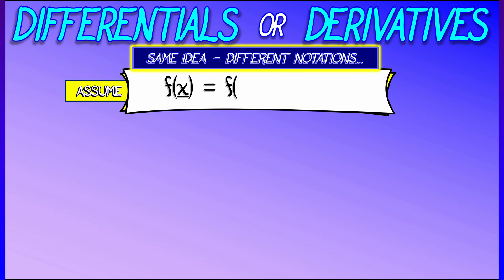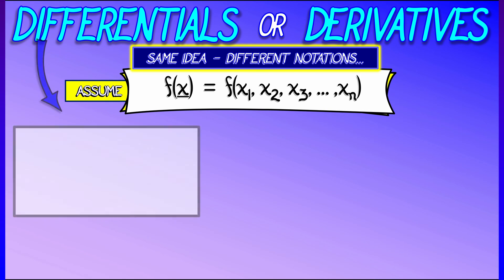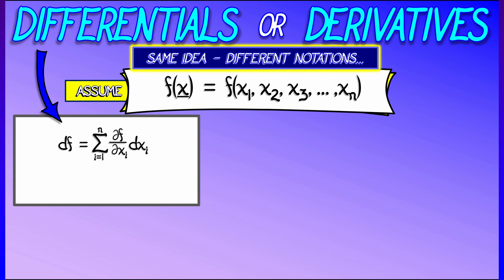Let's say we have a function f that depends on variables x₁, x₂, x₃, all the way up through xₙ. Now, when we've done implicit differentiation in the past, we write df, the differential,